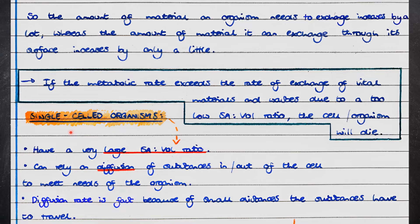Let's compare single-celled organisms to larger, multicellular organisms. Single-celled organisms have a very large surface area to volume ratio, and they can rely on diffusion of substances into and out of the cell to meet the needs of the organism. The rate of diffusion is fast because of the small distances the substances have to travel.